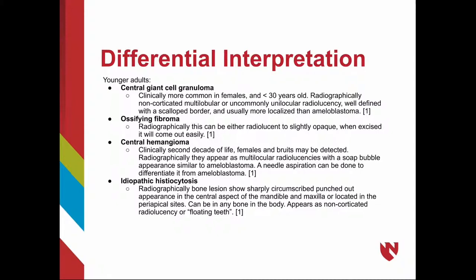Intraosseous hemangioma is clinically more common in the second decade of life in females, and bruits may be detected. Radiographically, they appear as multilocular radiolucencies with a soap bubble appearance similar to ameloblastoma; a needle aspiration can differentiate it. Idiopathic histiocytosis shows sharp, circumscribed, punched-out bone lesions in the mandible and maxilla at periapical sites, appearing as non-corticated radiolucencies or floating teeth, and can occur in any bone in the body.